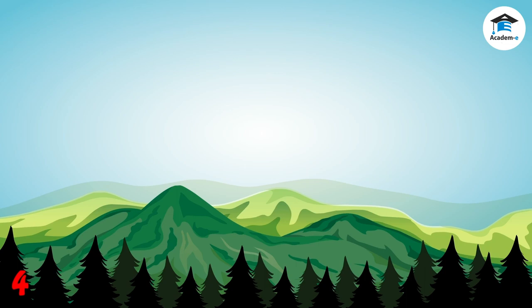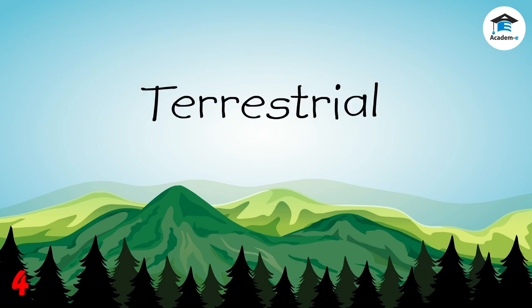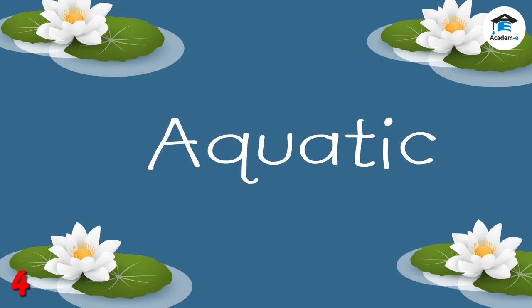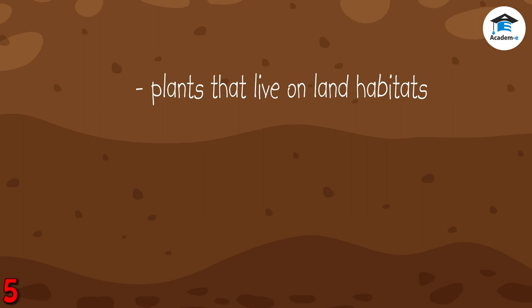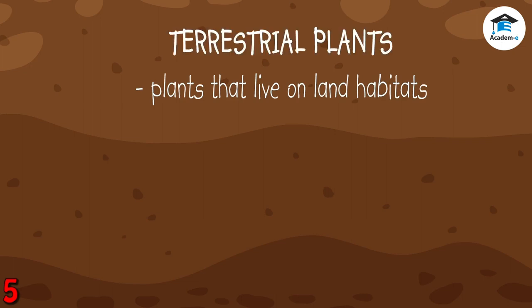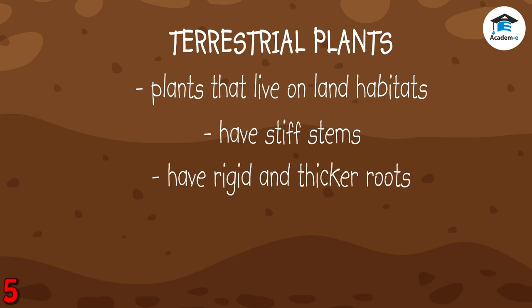There are three main types of plant habitats: terrestrial, aerial, and aquatic. Many plants live on land — these plants are called terrestrial plants. Generally, they have stiff stems that hold them upright and allow them to get sunlight. They also have rigid and thicker roots.